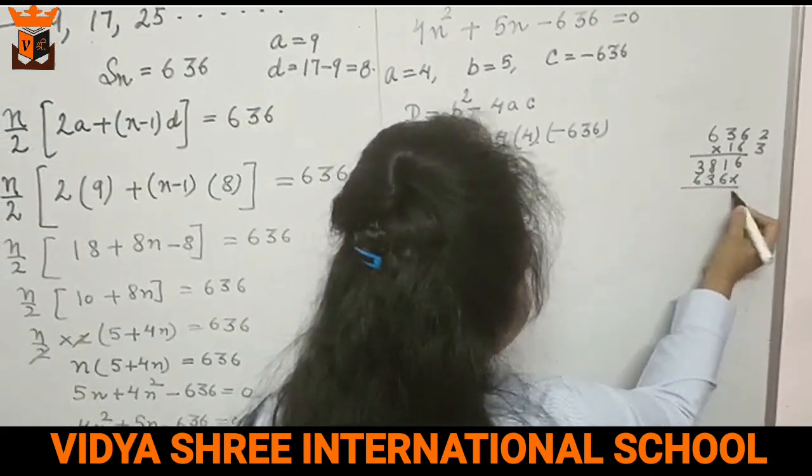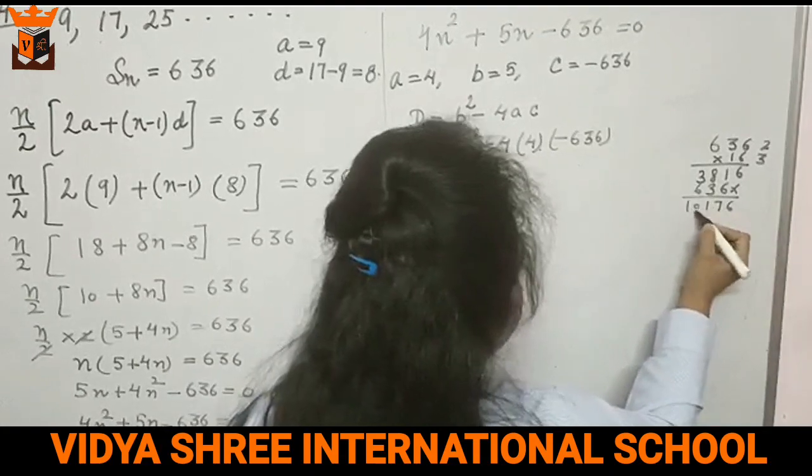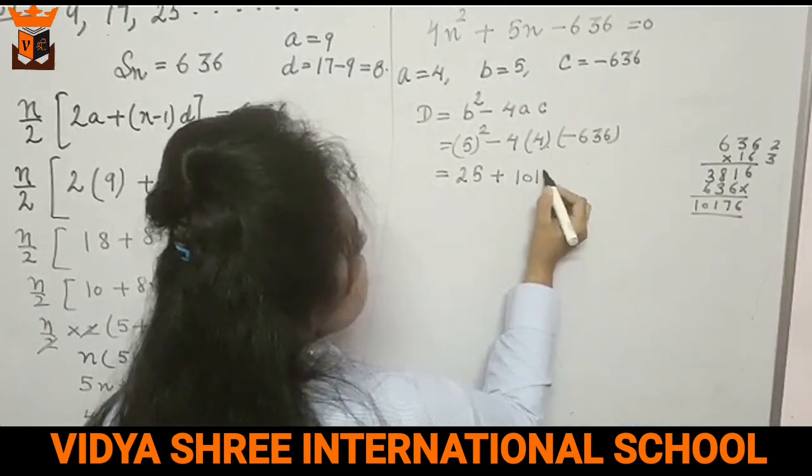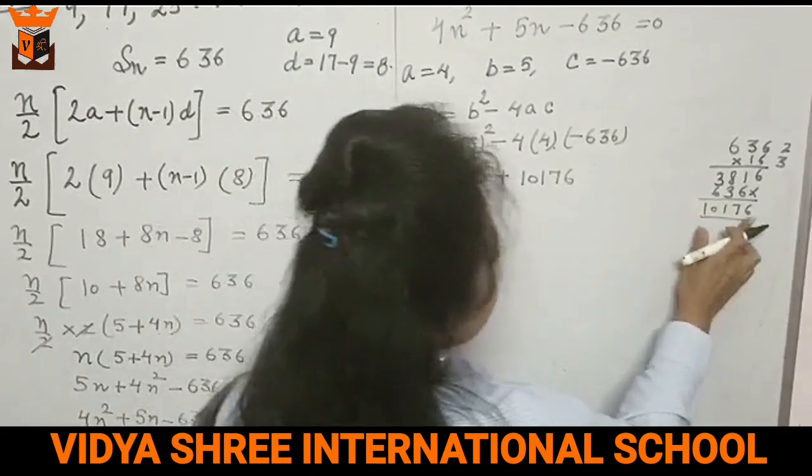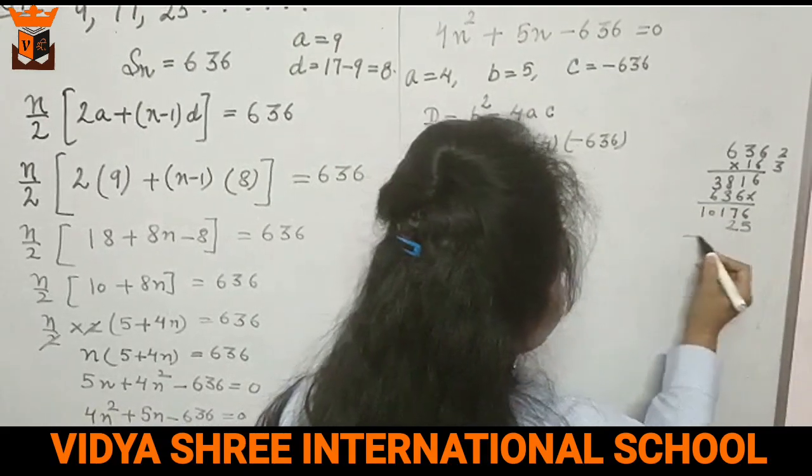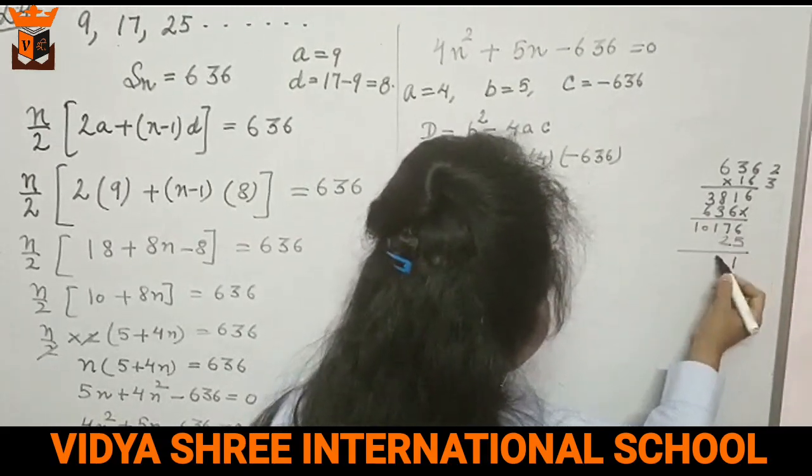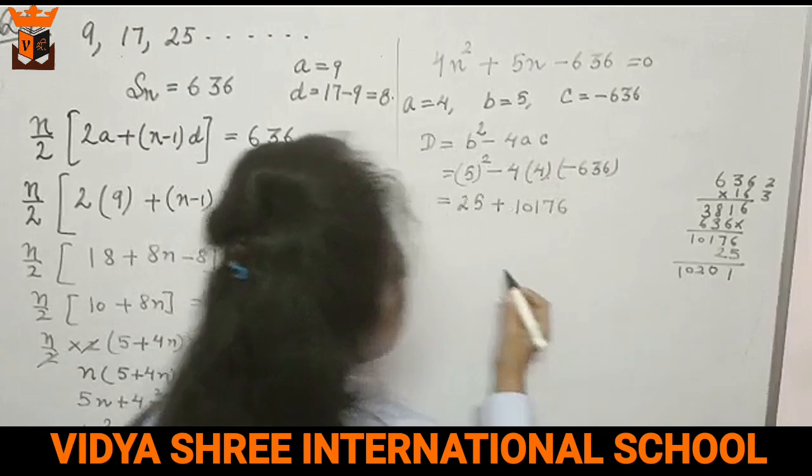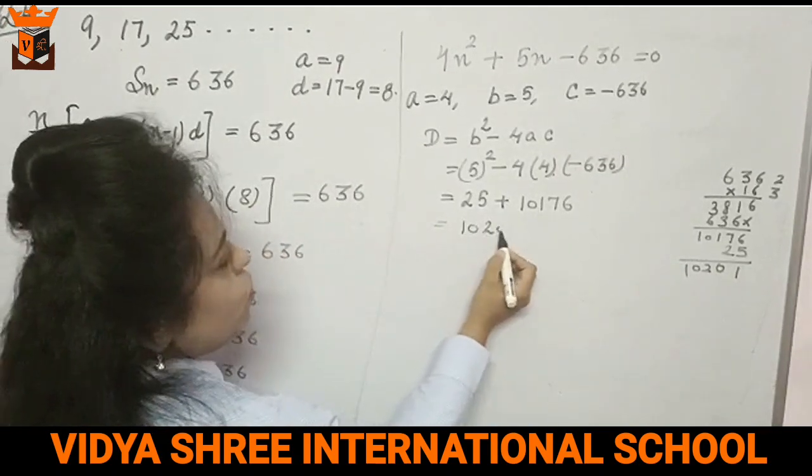We will multiply 16 with 636. So 6 times 6 is 36 plus 2 is 38, carry forward. This gives us 10,176. Adding 25 to this, we get 10,201.